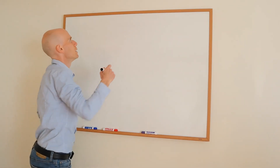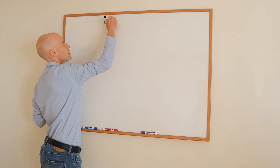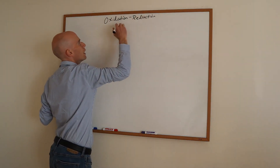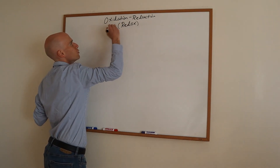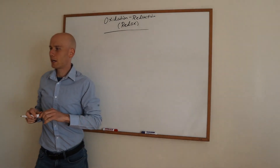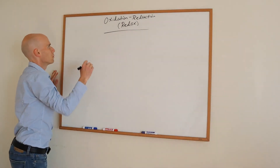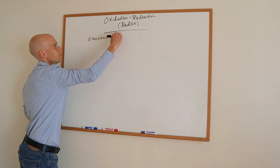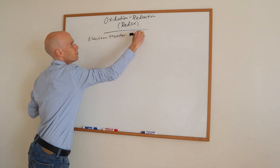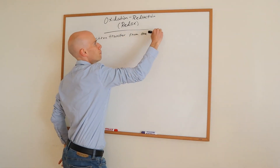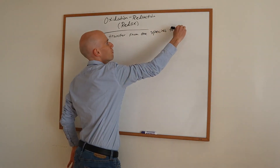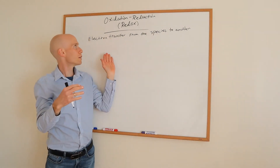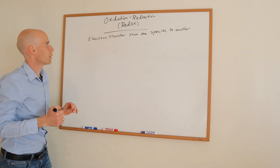We're going right into redox reactions. So we have oxidation and reduction, often shortened to redox. A quick definition: it's just an electron transfer from one species to another. So if you see reactions where you see an electron transfer, chances are it's a redox reaction.